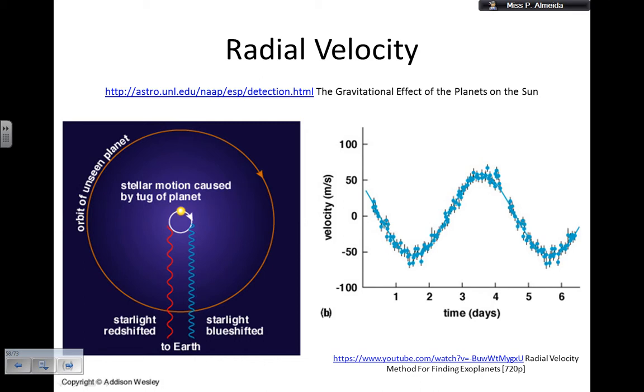The radial velocity method works by knowing that any object is going to cause a gravitational pull in another. So when I have a planet around the star, the star makes the planet go around it. But the planet is going to make the star wobble around the center of mass of the system. This is the planet going around the star, and the star, due to the gravitational pull of the planet, is going to go around the center of mass of that planet-star system as well.